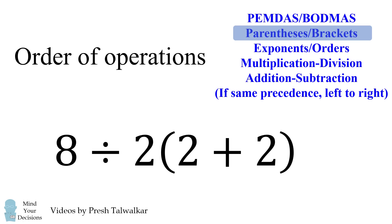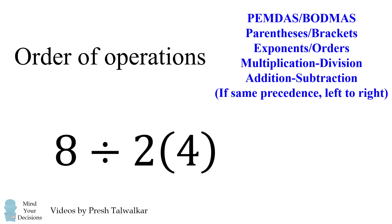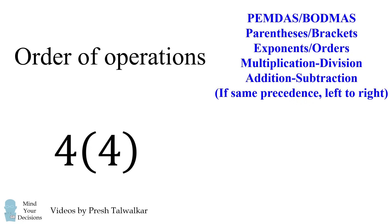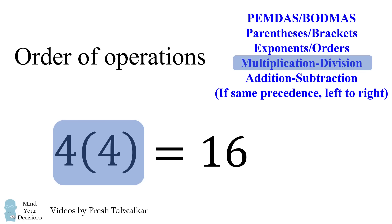We'll start with the parentheses. 2 plus 2 is equal to 4. We then have a division and a multiplication. When you have operators of the same precedence, you work from left to right. So we take 8 divided by 2 first. This evaluates to 4, and then we complete the multiplication of 4 by 4 and we get 16. This is without a doubt the correct answer according to the modern interpretation of the order of operations.